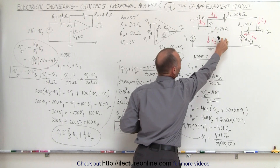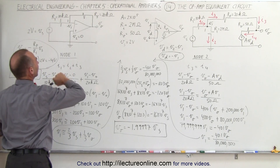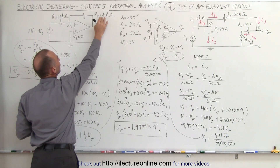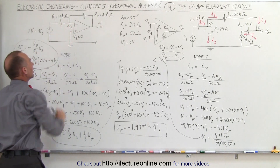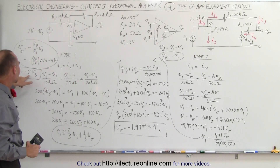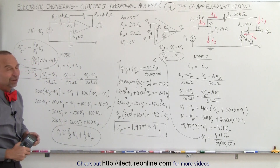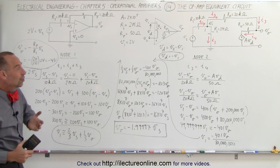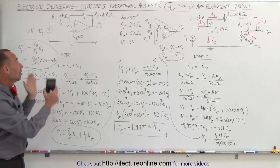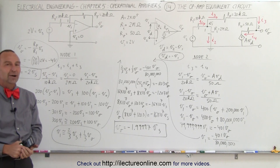In essence, we get the exact same answer whether we use the equivalent circuit taking everything into account, or simply use the simplified ideal circuit where the output voltage is calculated from the feedback resistor and input resistor ratio. You get virtually the same value, V_O ≈ minus 2·V_S. This shows it is perfectly fine to ignore what happens inside the operational amplifier and use the simplified circuit.